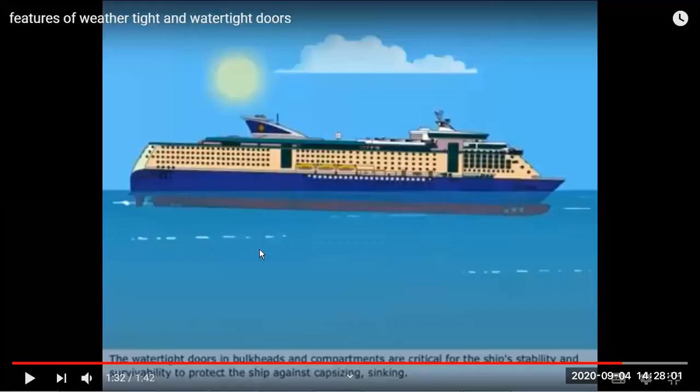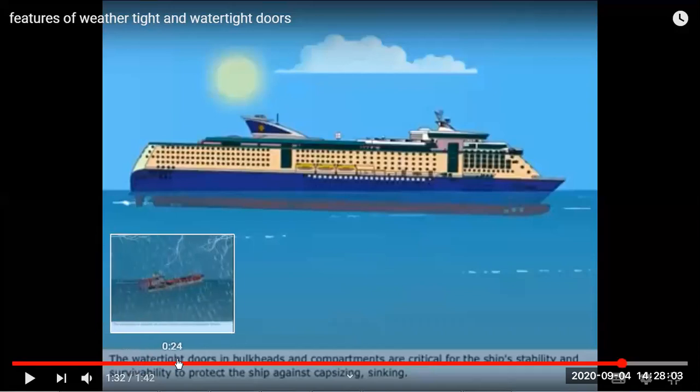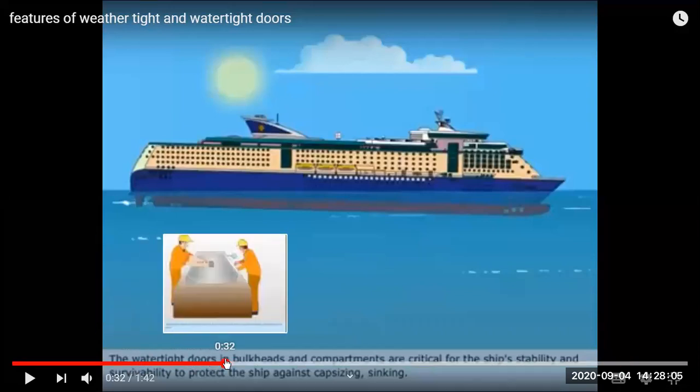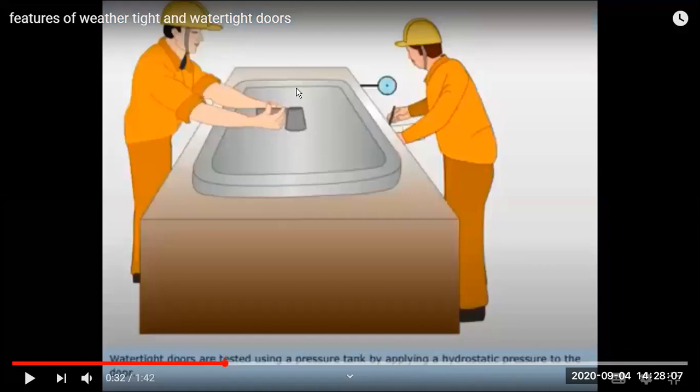We saw the testing method for water tight doors by putting them in the tank. The testing for weather tight doors or accommodation doors is just applying a water hose and one person stands on the other side and sees if any water is coming. Water hose testing is for weather tight doors and tank pressurized with water testing is for water tight doors.